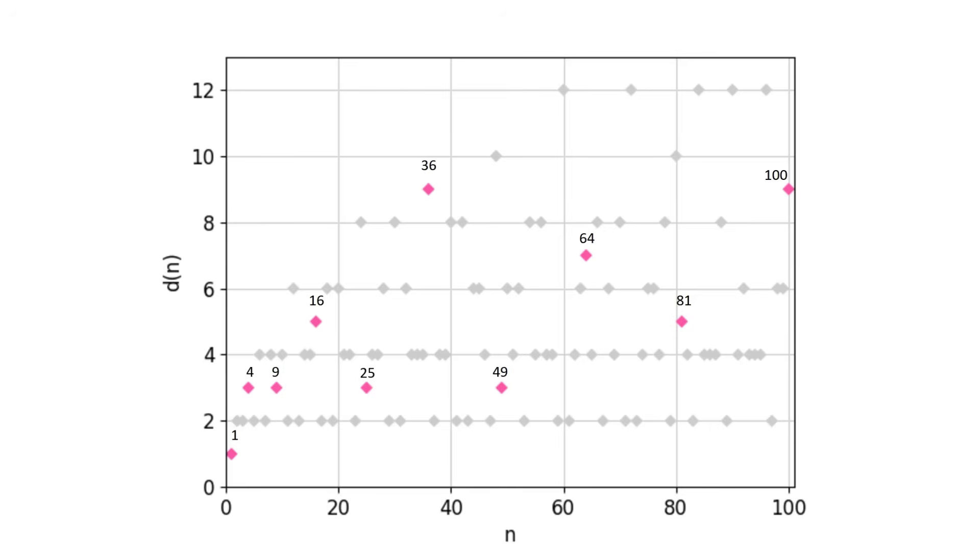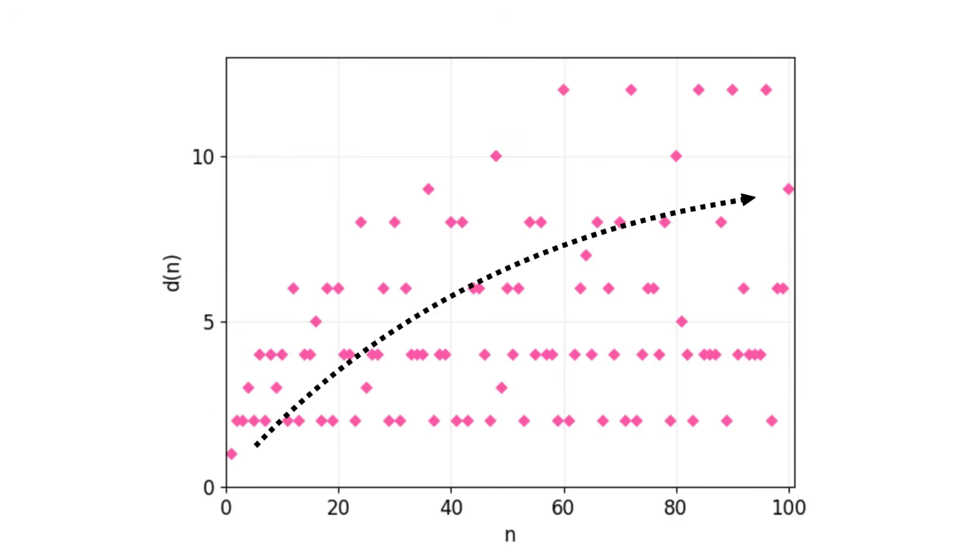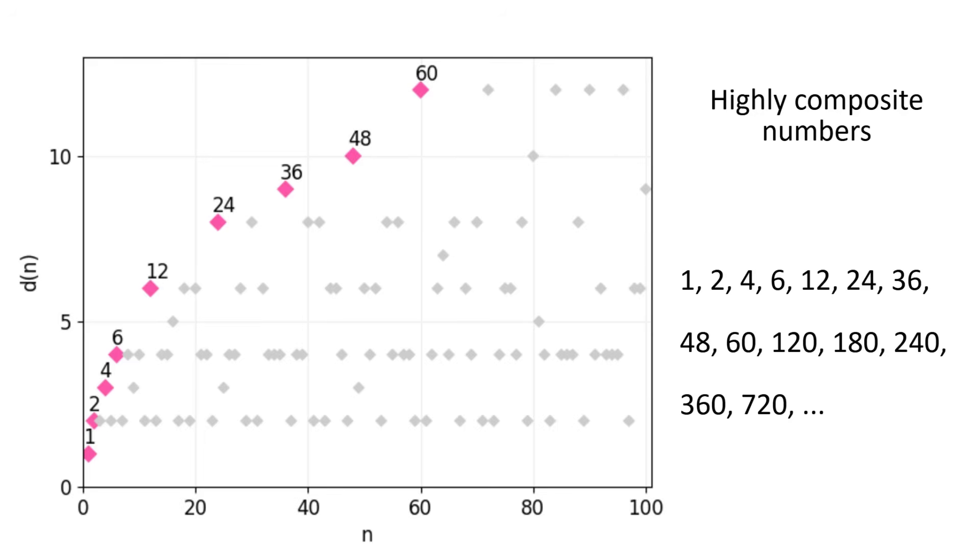Another thing you'll notice is that the scores tend to increase, and we'll never hit an absolute maximum. But if we look at which numbers have a higher score than anything before them, we get things like 36, 48, and 60, which are a good representation of very composite numbers. In fact, these ones are officially called highly composite numbers. But there's still something this score doesn't capture.